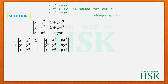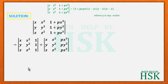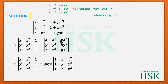From the first row we take x common, from the second row y common, and from the third row z common. From column 3 of the second determinant we also take p common. So x, y, z, and p are written outside, leaving a simpler determinant inside.